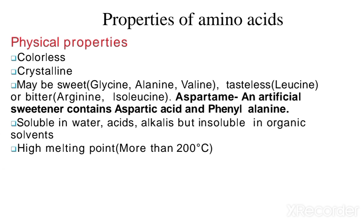Starting from the properties of amino acids — physical properties: these are colorless and crystalline. They may be sweet, tasteless, or bitter. Sweet examples include glycine, alanine, and valine. Some amino acids are tasteless, for example leucine. Some are bitter, for example arginine and isoleucine. Aspartame is an artificial sweetener containing aspartic acid and phenylalanine, and is used as a sweetening agent in different products.